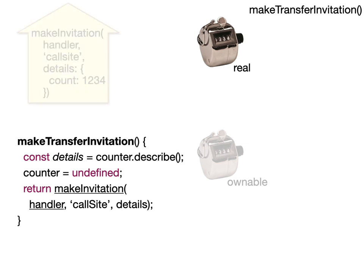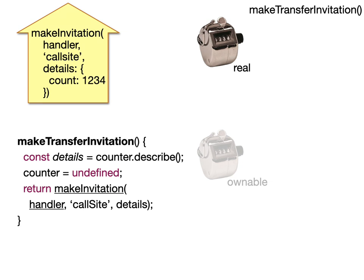The next thing is it sends a makeInvitation method from the contract to ZOE. The makeInvitation has three arguments: the handler, which is basically a callback — a piece of code; the call site, which by convention is a literal string that uniquely identifies a particular call site in the code of the smart contract; and details, which are the self-description gotten from the described method.